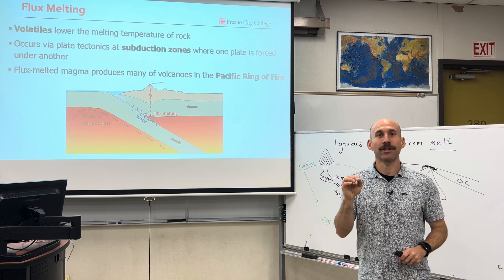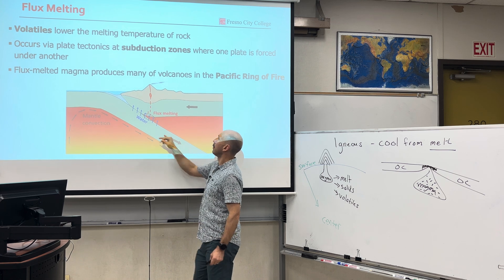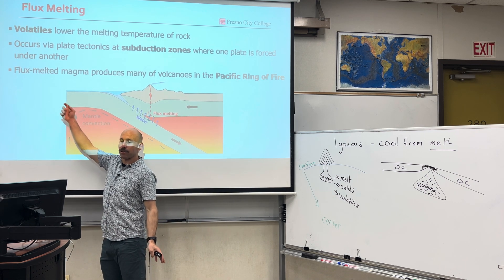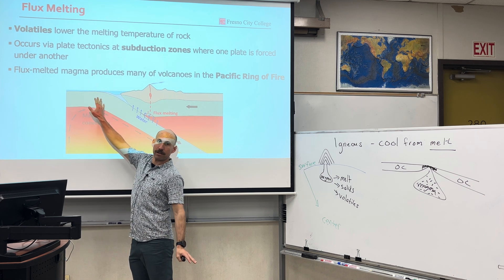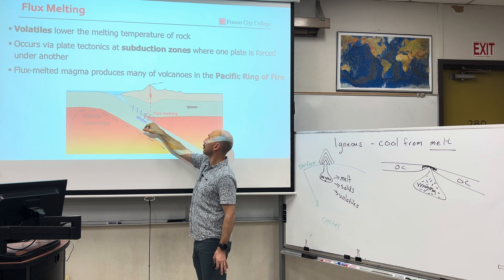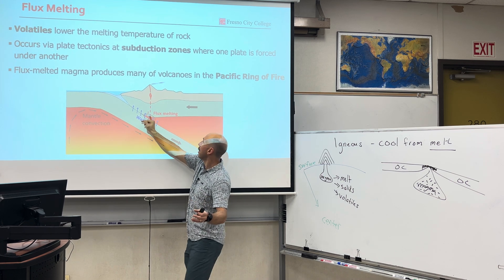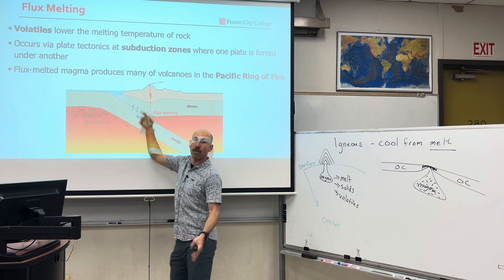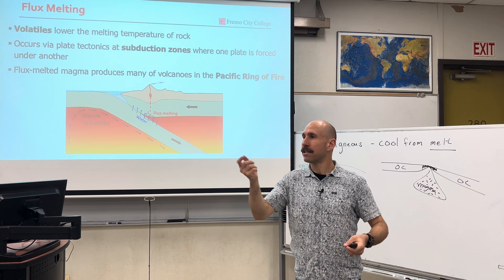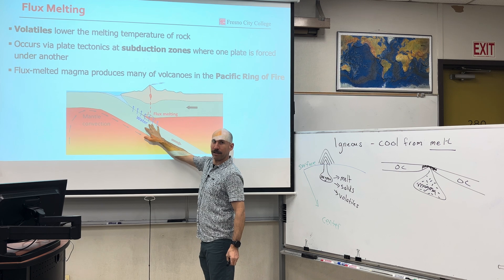Flux melting occurs at convergent plate tectonic boundaries, where you have a descending slab of oceanic crust going deeper, so it's getting warmer because of the geothermal gradient. The process of oceanic crust living at the bottom of the ocean and collecting marine sediments infuses the crust with volatiles — specifically water — and the interaction of depth, water, and subduction creates magma through flux melting. That magma has a lower density than surrounding rocks and ascends upward to feed volcanoes. This is why we have continental volcanic arcs at convergent boundaries.